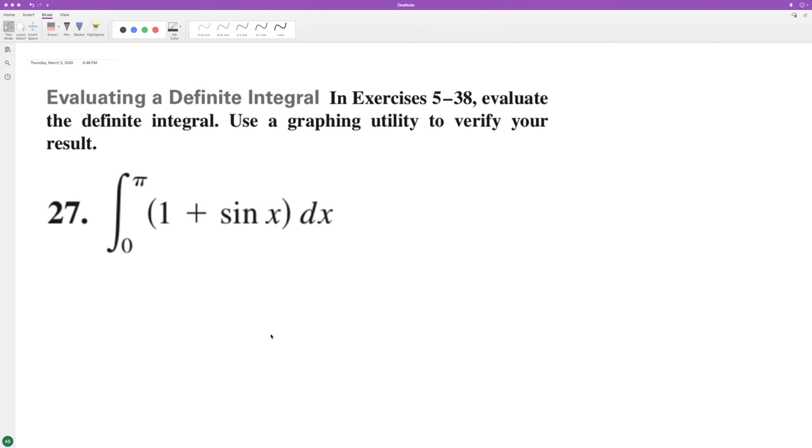All of this from zero to pi. So first thing we want to do is integrate one and sine. So we end up with x, and then the integral of sine is equal to negative cosine of x.